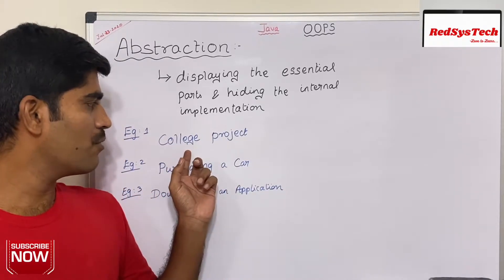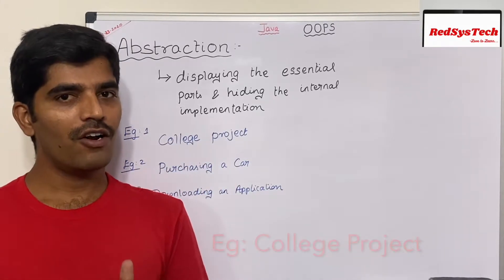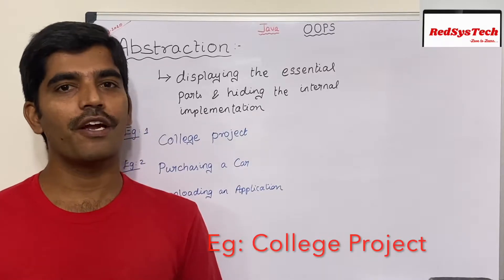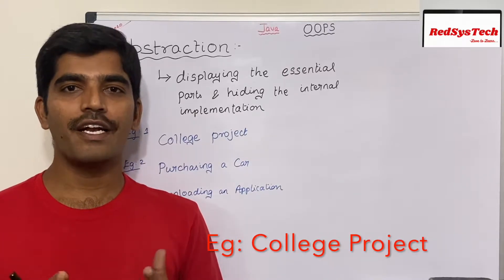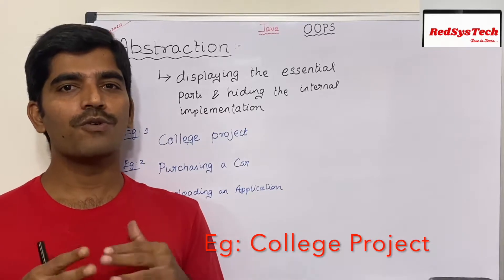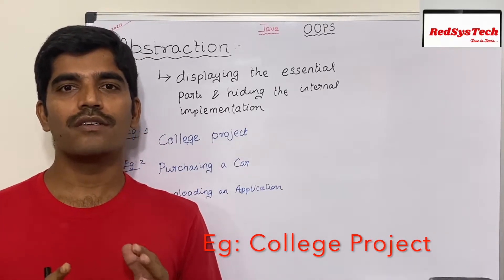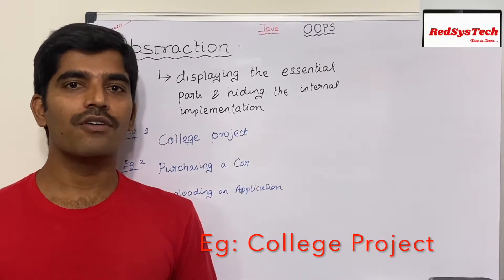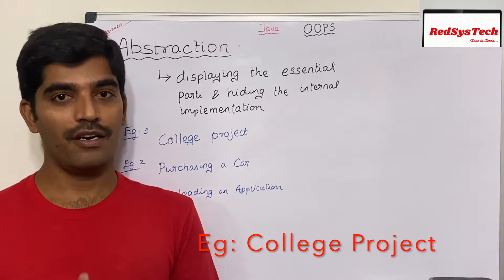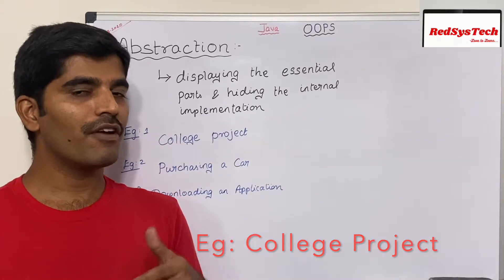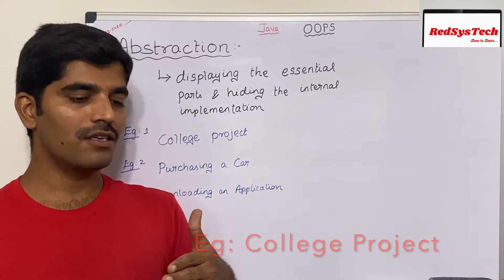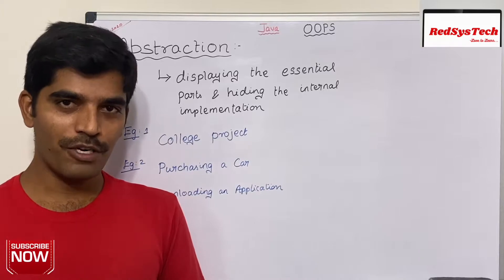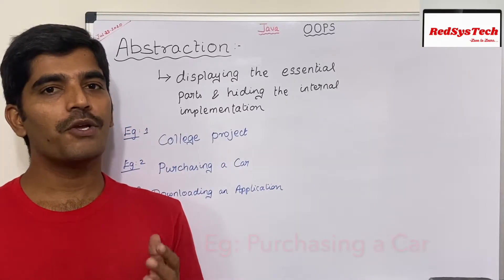Let me explain with a simple example of a college project. In college, when you want to implement a project, before you start working on it you have to come up with an idea — what your project is all about and what your plan is. But you are not supposed to explain how you are going to implement that project right away; that comes in real time. So you are telling what services you are going to provide, not how you are implementing it.